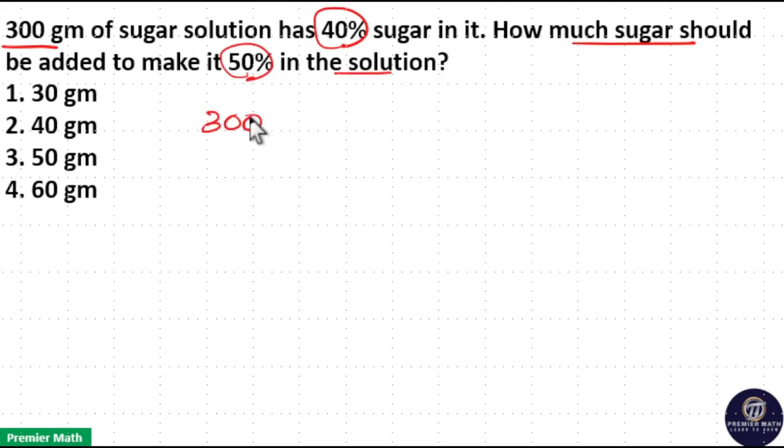Here this 300 gram sugar solution has 40% sugar means 10% of 300 is 30. Then 40% is 4 into 30, which is 120.